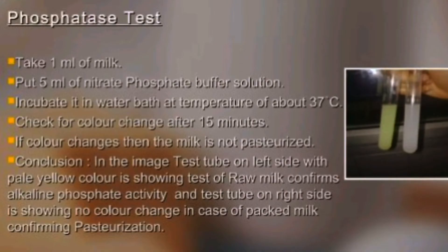Phosphatase test — this test checks the pasteurization process to verify whether milk is pasteurized or not. Phosphatase is an enzyme present in milk; this enzyme becomes inactivated if pasteurization is performed properly. These are the microbial examinations through which milk undergoes a series of tests to identify and screen microorganisms responsible for spoilage of milk.